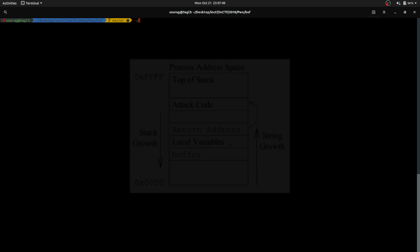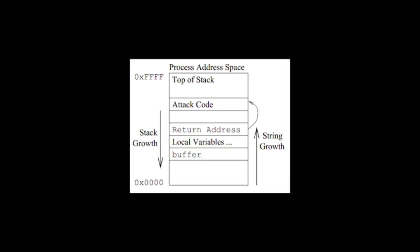Now, let's talk about what happens when a function is called. When a function is called, the address to where the program should return to is stored on the stack before it goes into the function. This is because when the function is over, the program needs to know where it should return to — where control is given back. Otherwise, it will be at a point where it does not know where it should go. So the return address will be stored on the stack.